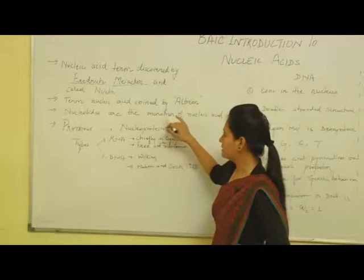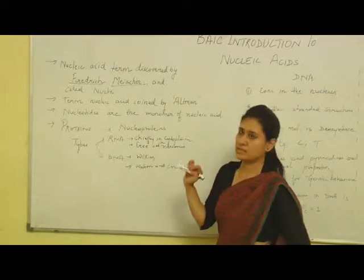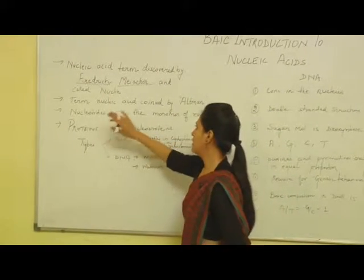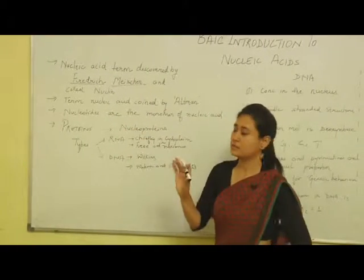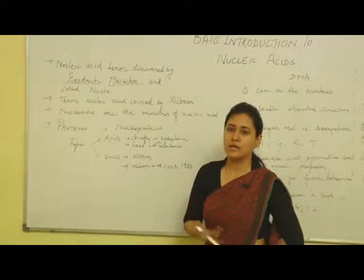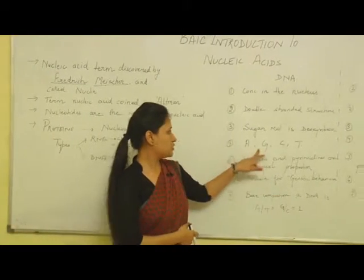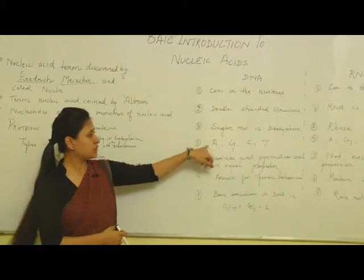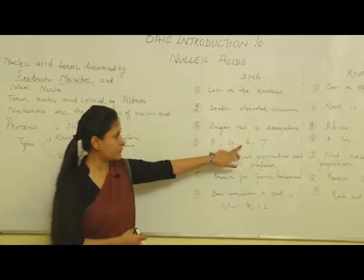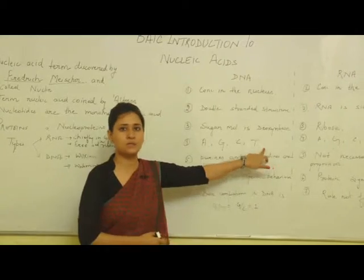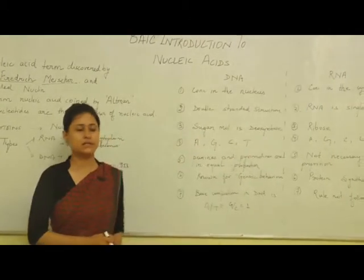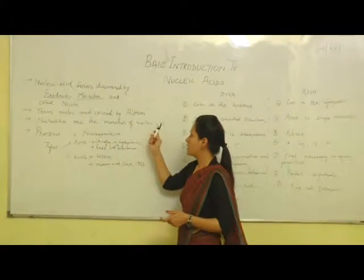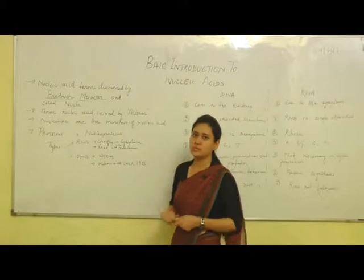Nucleic acids are actually made up of monomers called nucleotides. Various nucleotides form nucleic acid. These nucleotides can be A, G, C, and T — where A stands for adenine, G stands for guanine, C stands for cytosine, T stands for thymine, and also uracil. These are all nucleotides which form nucleic acid.